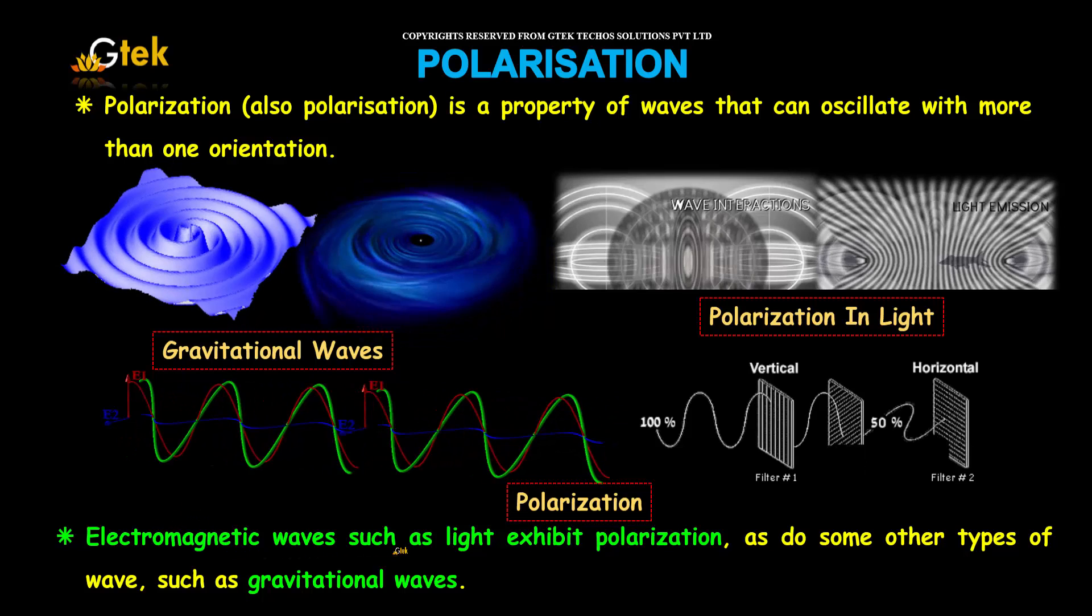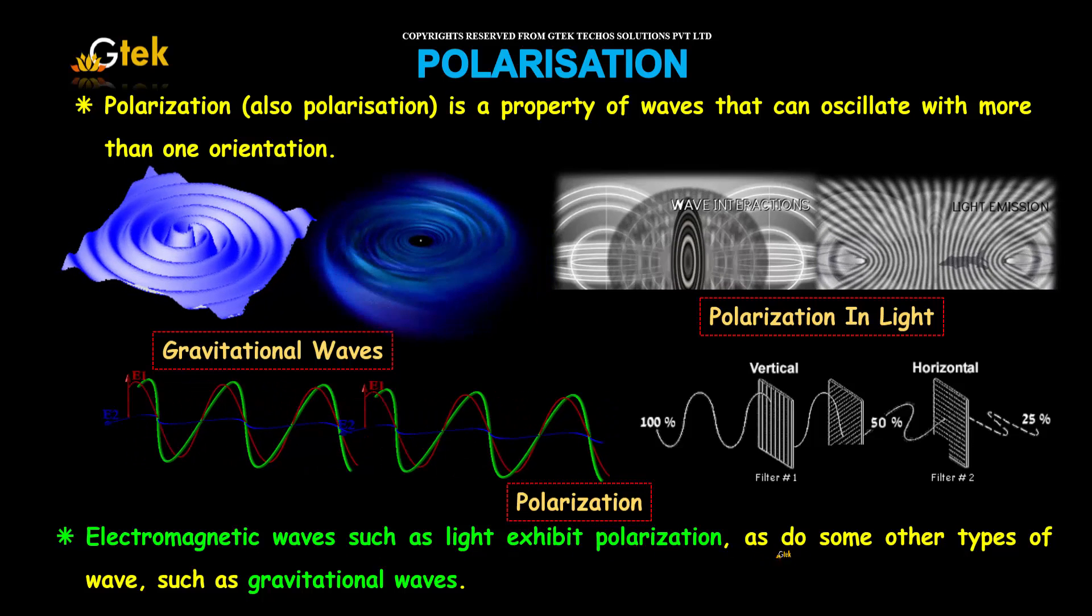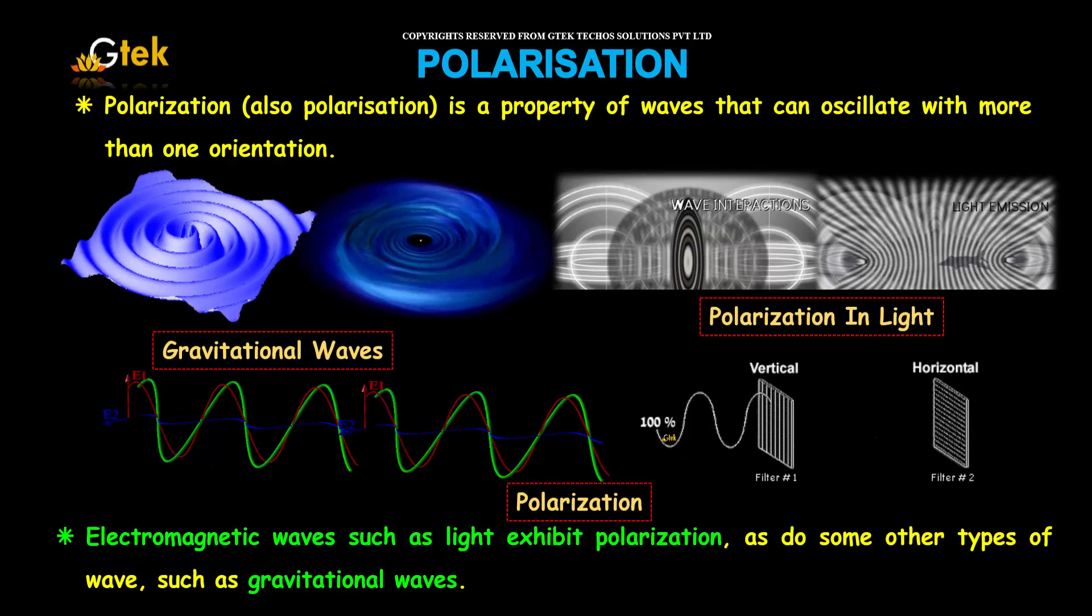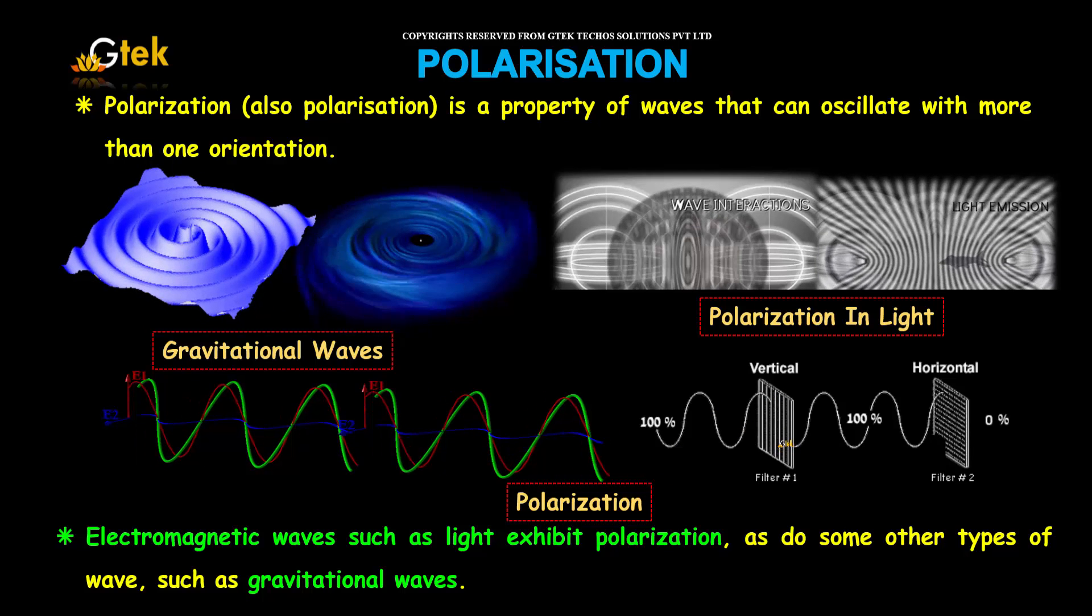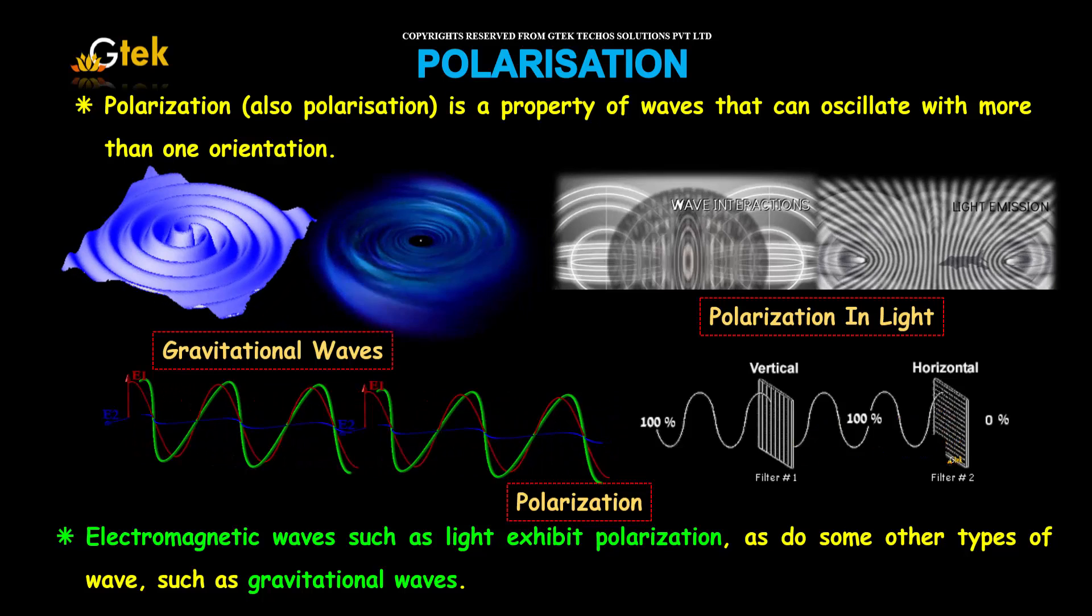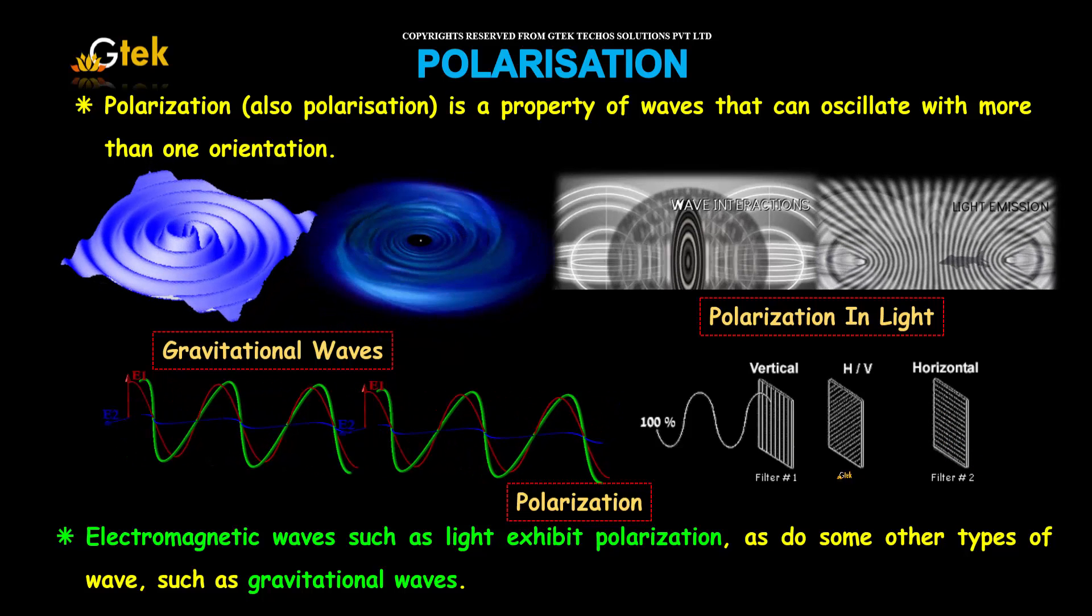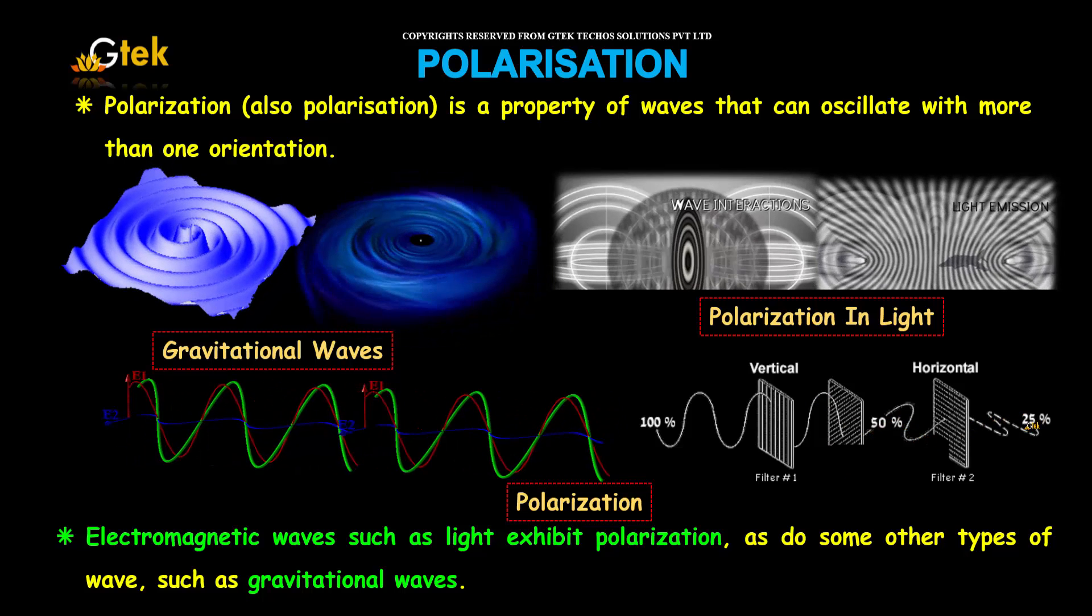Electromagnetic waves such as light exhibit polarization, as do some other types of waves such as gravitational waves. You are able to see the waves are there, vertically polarized, you are able to see it is horizontally polarized. You got two filters. You can see it here, it is polarized in different directions.